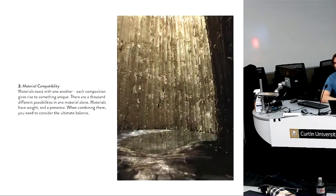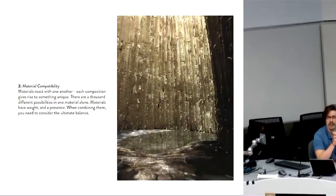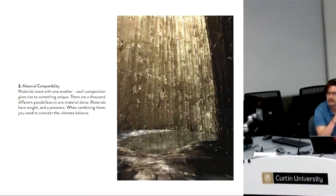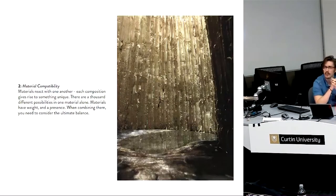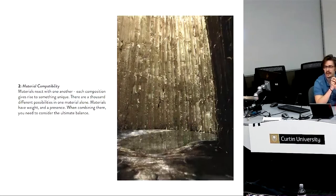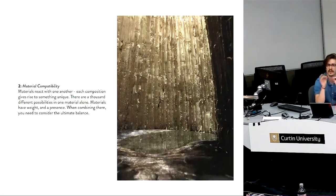Number two is material compatibility, and that materials react with one another. Each composition gives rise to something unique. There are a thousand different possibilities in one material alone. Materials have weight and a presence, and when combining them, you need to consider the ultimate balance. So what this says is that we, as the designers, not only are we creating a form and shaping a form, we need to think about what we're using as the material to do that shaping. And we might be cladding material against an existing substrate. We're using some sort of skeletal system, and we're applying a skin to that. Or we might be carving away from a solid material, and the material that is the structure is also the face material that we see. So we need to think about what is the material that we're going to touch, see, and experience.